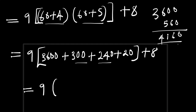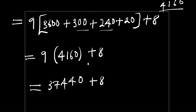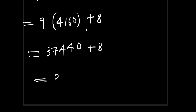So we have 4160 plus 8, giving 4168. Now let's multiply: 9 times 4168. 9 times 0 is 0; 9 times 6 is 54, write 4 carry 5; 9 times 1 is 9 plus 5 is 14, write 4 carry 1; 9 times 4 is 36 plus 1 is 37. So we get 37448, and this is our final answer.